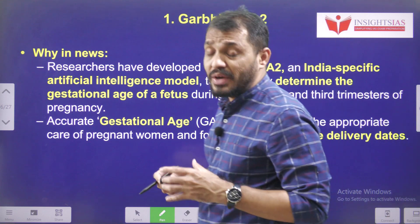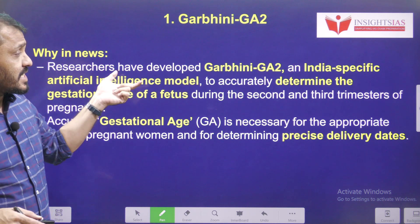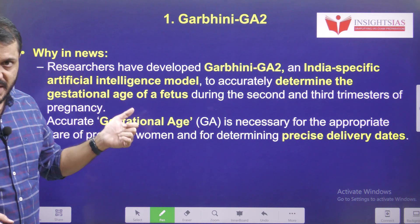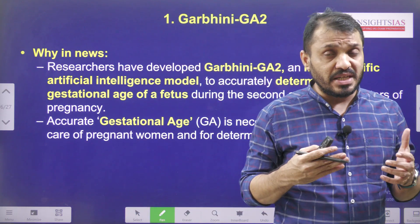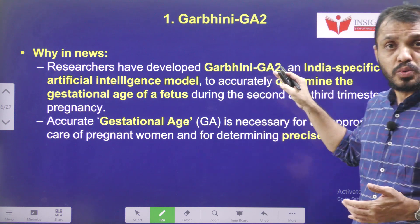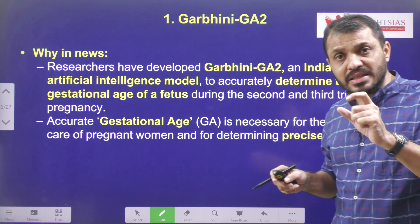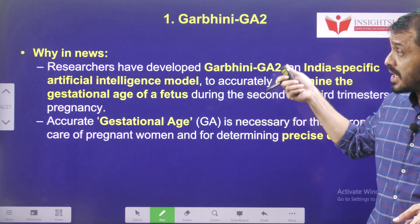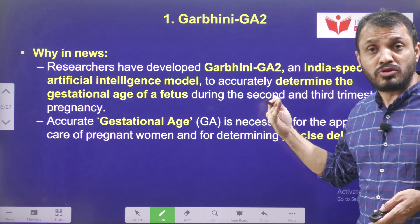Now the context: why we are discussing Garbini GA2. This Garbini GA2 is an India-specific artificial intelligence model. This AI model is going to help determine the gestational age of the foetus — that means at which developmental stage the foetus is — so that appropriate care can be taken towards the foetus as well as the mother. Compared to present models, this Garbini GA2 is going to offer a wide range of solutions. The present models we are using are developed based on European standards, whereas this one is going to be based on Indian standards.